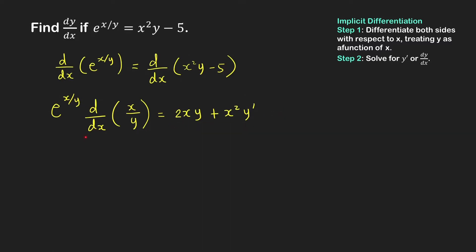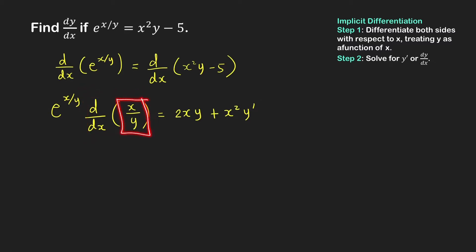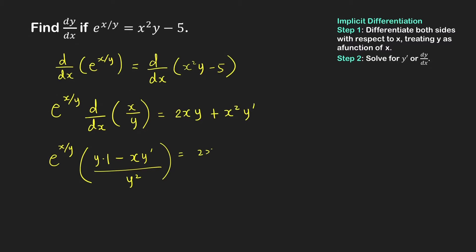We're not yet done with step 1, because we still have to compute the derivative of x over y. Since y is a function of x, this is a quotient of two functions of x, so we use the quotient rule. The derivative equals e raised to x over y, times the denominator times the derivative of the numerator — that is 1 — minus the numerator times the derivative of the denominator, which is y prime, all over the square of the denominator. This equals the right-hand side: 2xy plus x squared y prime.